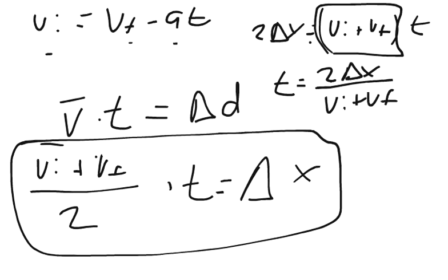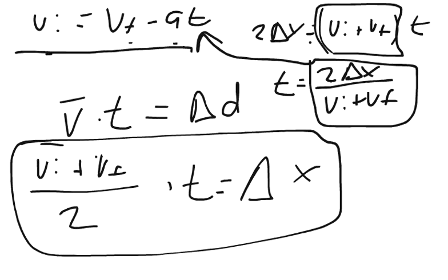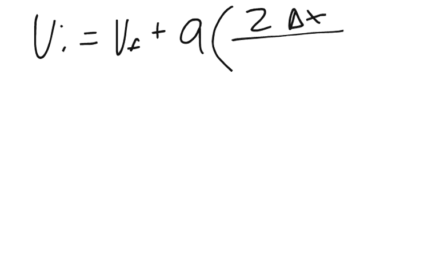Now, the beauty of this is I can take this term and replace it right here where my time is on my problem where I've solved for initial velocity. Let's go ahead and do that. My initial velocity will now equal my final velocity plus a times this new term, 2 times the change of x over the initial plus the final velocity.